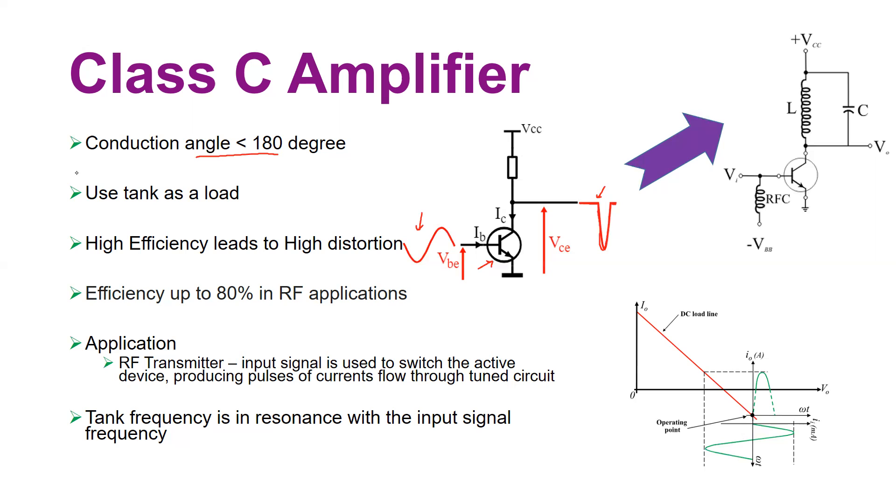Instead of conducting the transistor for a full 360 degrees or 180 degrees or in between 180 to 360 degrees which we did in earlier classes of amplifier, in Class C we are letting the transistor to be on only for a specific time interval of the input cycle that is less than 180 degrees.